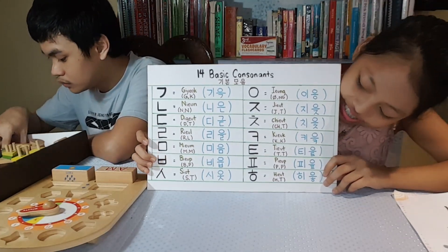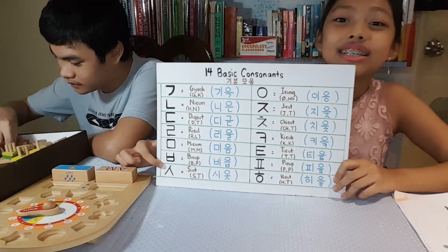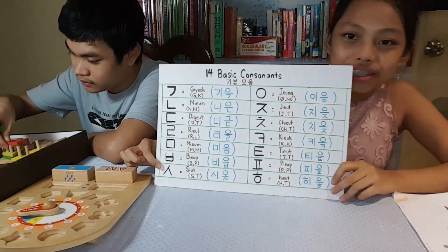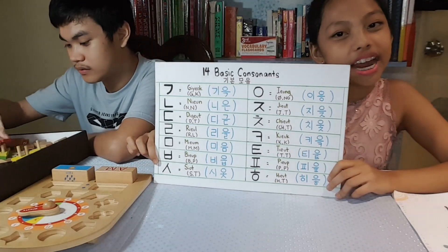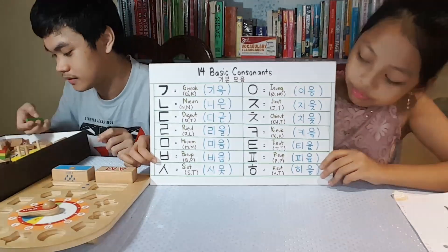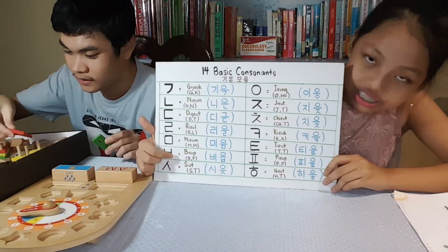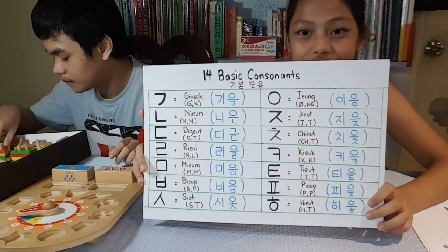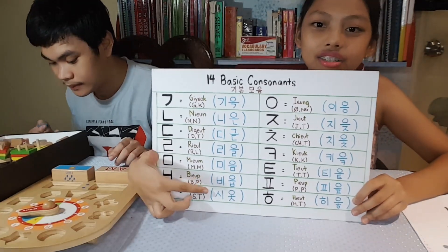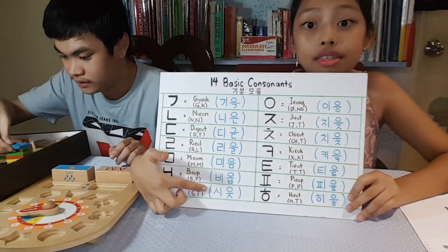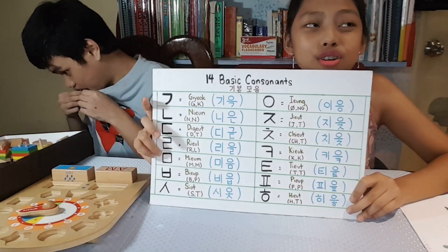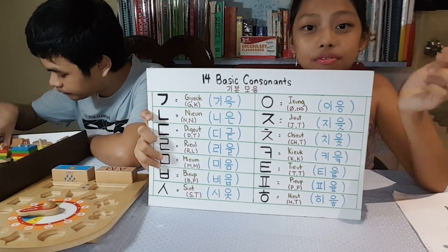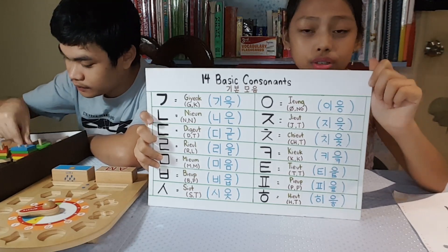The next basic consonant sounds like 'S.' This is the Korean alphabet character or the Hangul symbol. And Si-yot is the romanization. Over here we have the Hangul name. The consonant Si-yot is S sound in the beginning and T sound in the final or in the end.